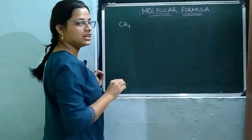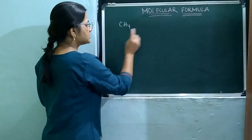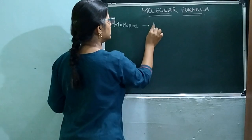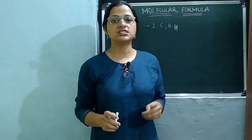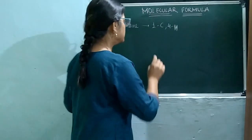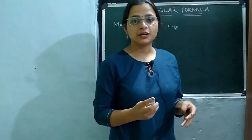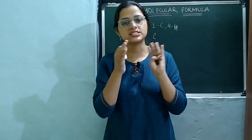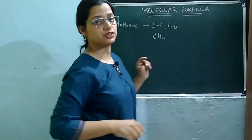Let's take methane. We know that methane has 1 carbon atom and 4 hydrogen atoms. If you have more than 1 atom of an element, you write the number as a subscript. So methane is written as CH4.